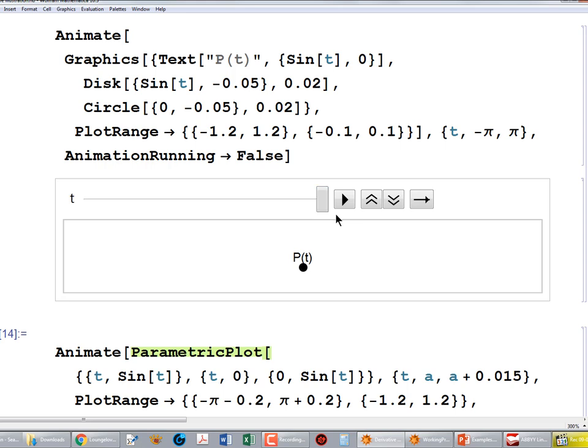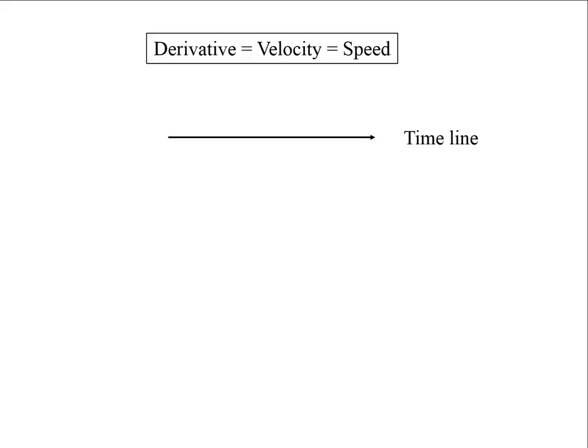We can imagine that this is a car moving along the road back and forth, and then that picture leads to the following generalization.